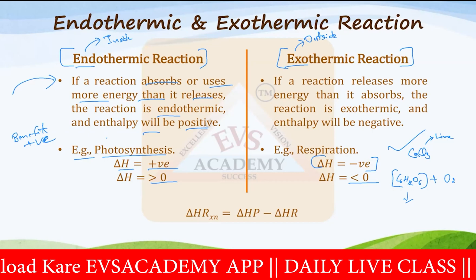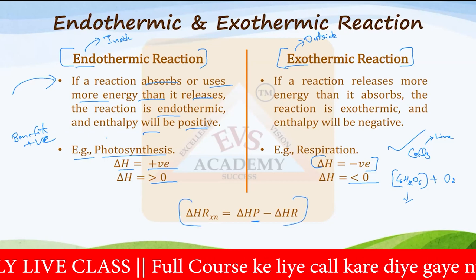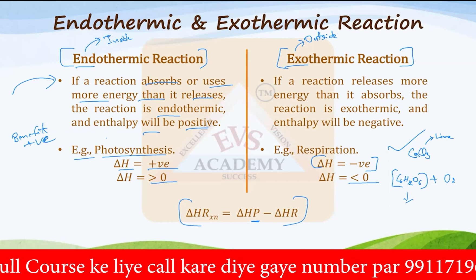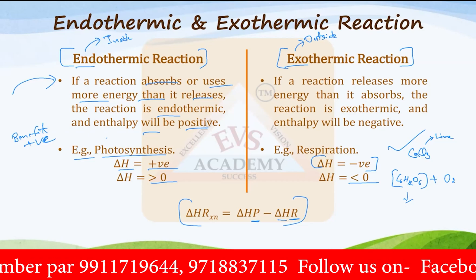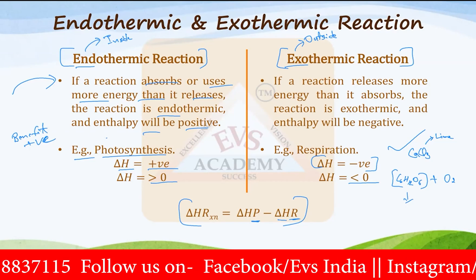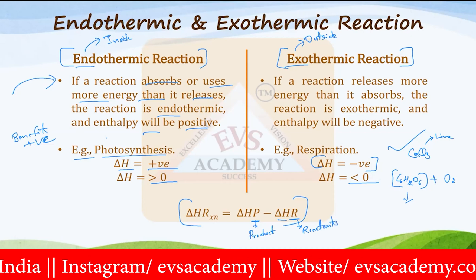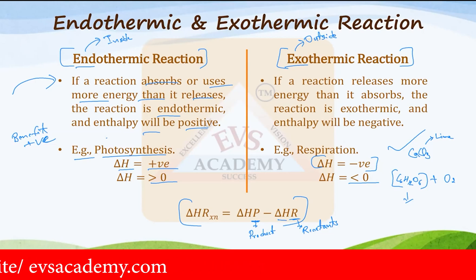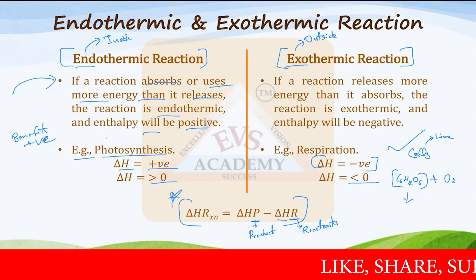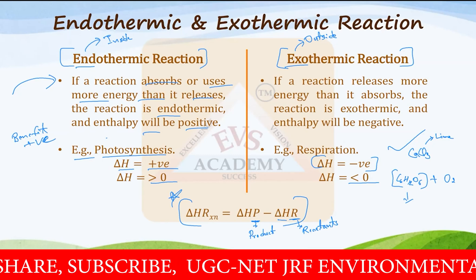The delta H of the whole reaction — delta H reaction equals delta H of the products (delta H P) minus delta H of the reactants (delta H R). P is the product and R are the reactants. In the catalyst book, you can find some examples where the delta H reaction value is asked, and delta H product and delta H reactant values are provided. Use this formula to solve those questions — just subtracting the two values will give you the delta H reaction value.